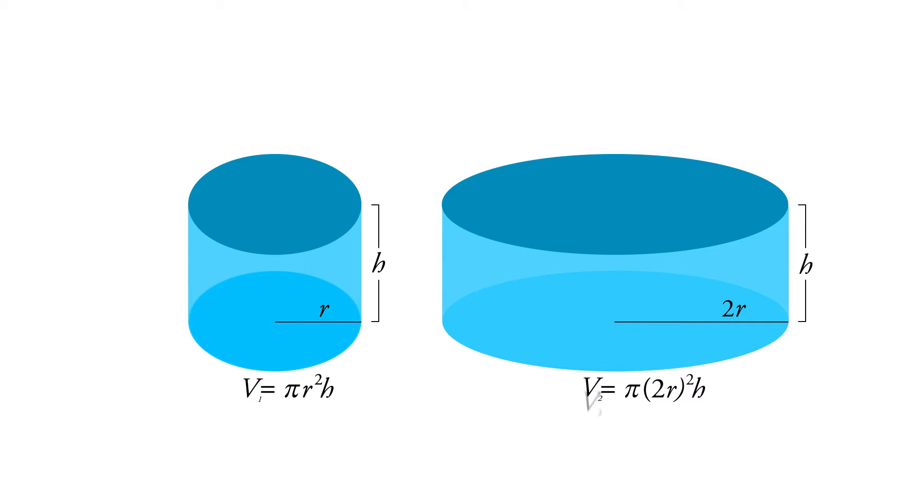Then we see that the volume of the new can, v2, is equal to pi times 4r squared times the height. And we can take that 4 out and we get the volume is 4 times pi r squared times the height.